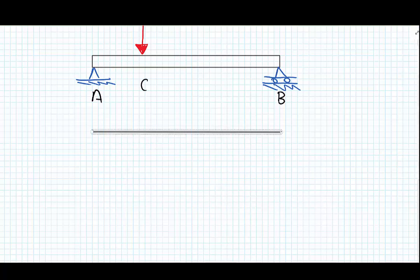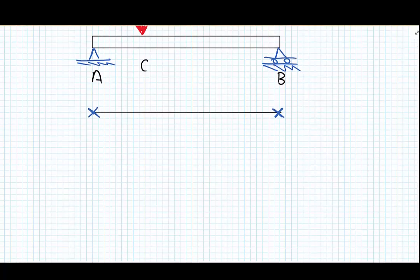So along our beam, what we're going to do is look at what we know as engineers just on inspection of this beam. And what we know is that at A, the beam cannot deflect vertically at point A. Likewise, point B, there will be no vertical deflection at point B. Finally, the other piece of information we know about this beam is if we apply a load downwards at point C, we can be pretty certain that our beam will also deflect downwards at point C.